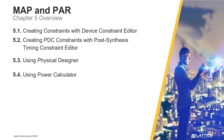In the fourth section of the chapter, using power calculator, we will discuss Radiant's power calculator tool and how it can be used to calculate the static and dynamic power consumption of a design. In the fifth section, using timing analyzer, we will discuss Radiant's timing analyzer tool and how it can be used to check a design's timing performance after place and route.